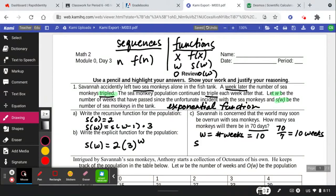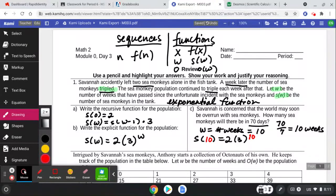So plugging into the explicit, we go s of 10 begins with two multiplying by three every time to the power of 10. So this time they're asking us to plug in 10 for our number of weeks. So we're going to go over to our Desmos and put two times three to the power of 10.